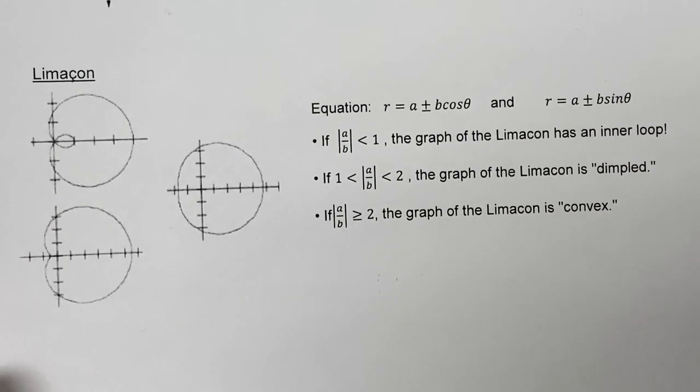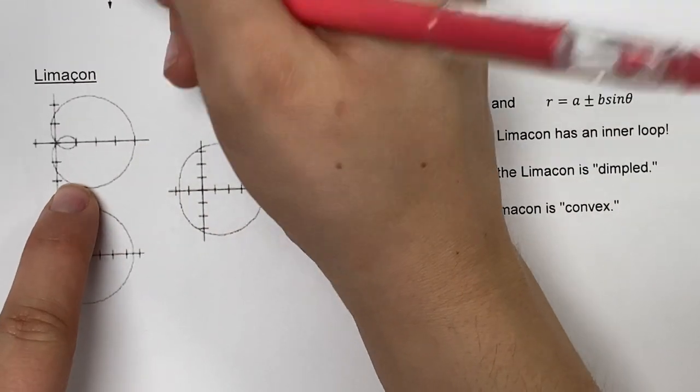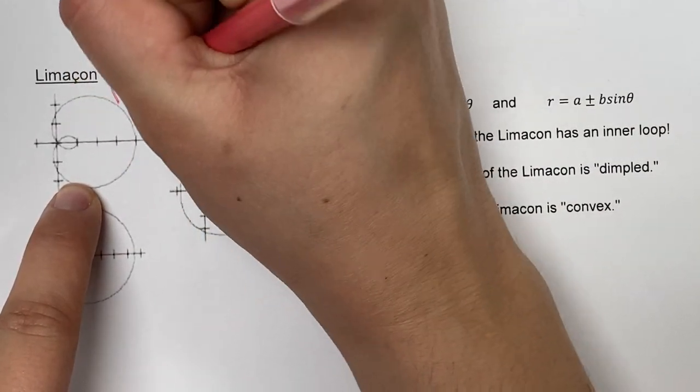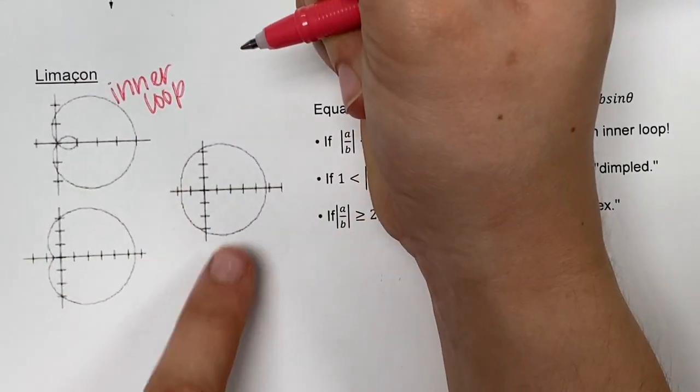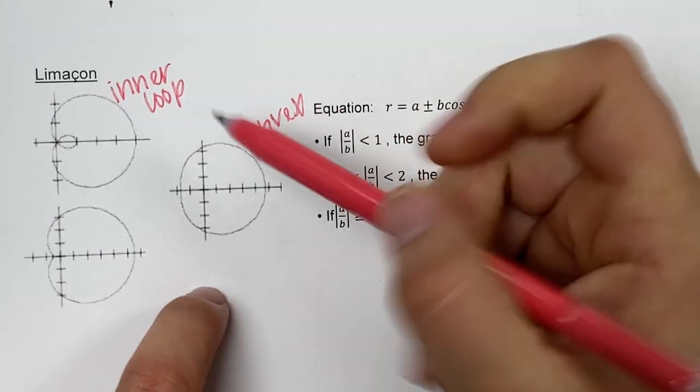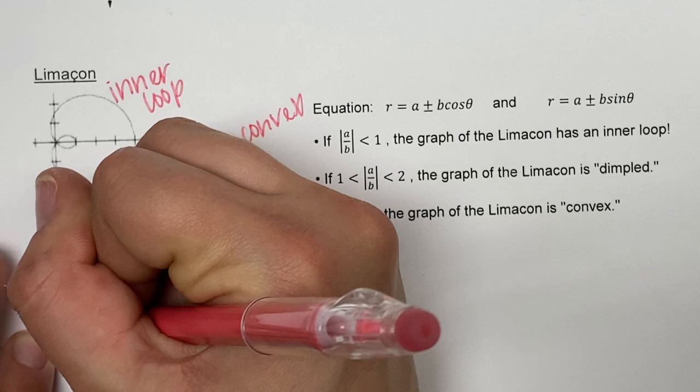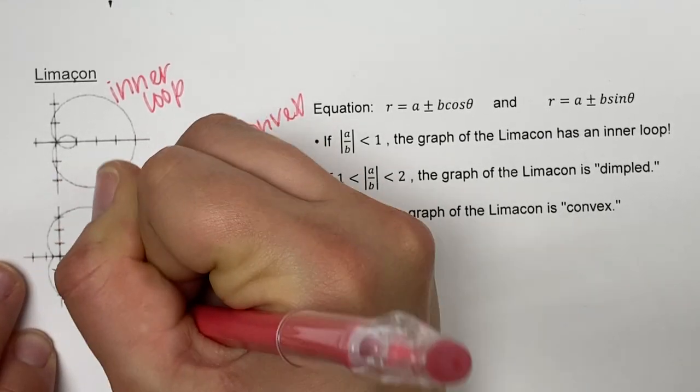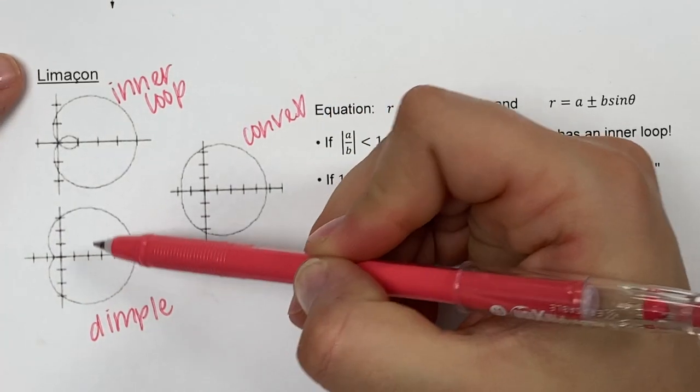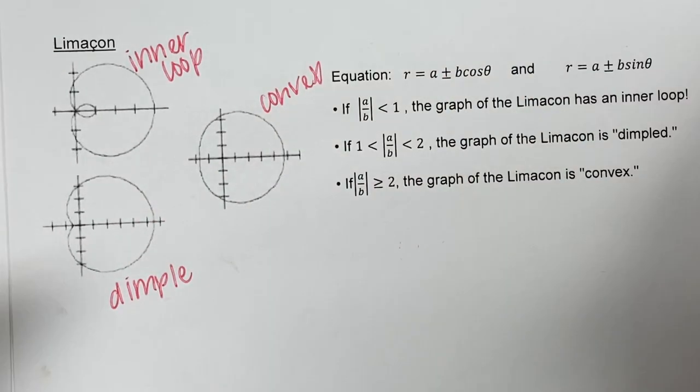This next graph is pronounced limaçon. Fancy, right? There are three different types of limaçons: an inner loop, a convex (which has kind of a flat side), and a dimple. The dimple graph looks very similar to cardioid. However, the dimple doesn't touch the pole—it goes a little bit past it.